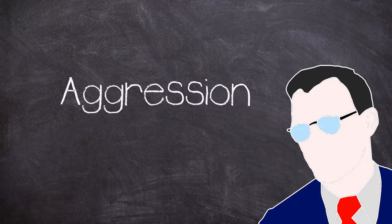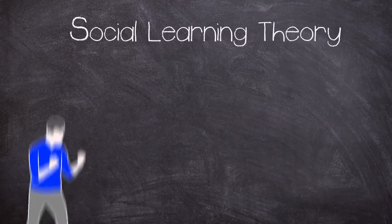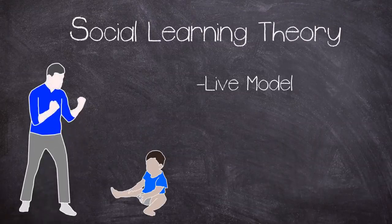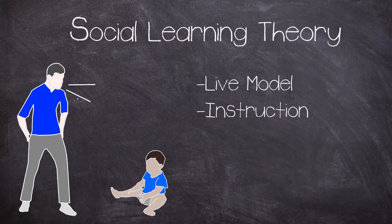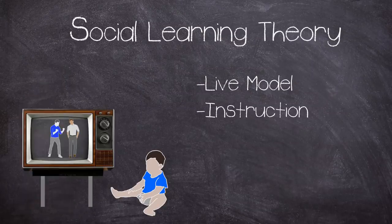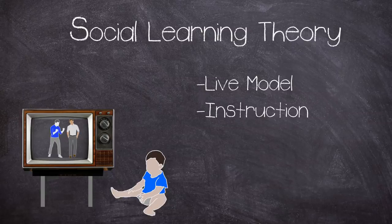In social learning theory three models of observational learning are posited. Live models where a person is demonstrating the desired behavior to a participant. Verbal instruction in which an individual describes the desired behavior in detail and instructs the participant in how to engage in the behavior. And symbolic in which modeling occurs by means of the media including movies, television, literature and radio. Stimuli can either be from real or fictional characters.